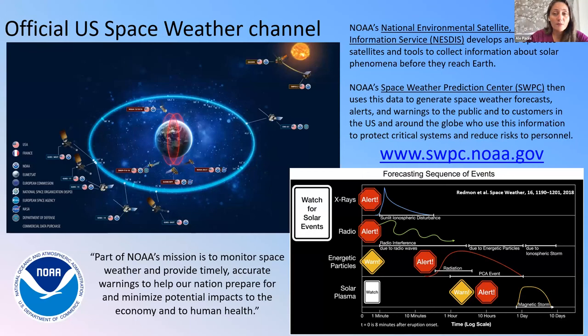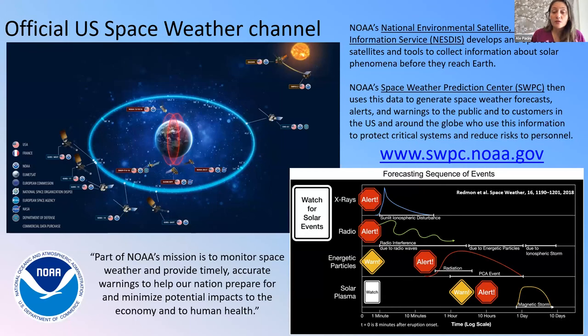Who are the users of space weather? They are people interested in how these processes affect them — industries like airplanes, power grids, oil and gas. All sorts of industries rely on our information. I'll now pass it to Emmanuel, who's going to show us a little bit of the physics behind these processes that happen in the sun and around the Earth, and why that is important to these industries.